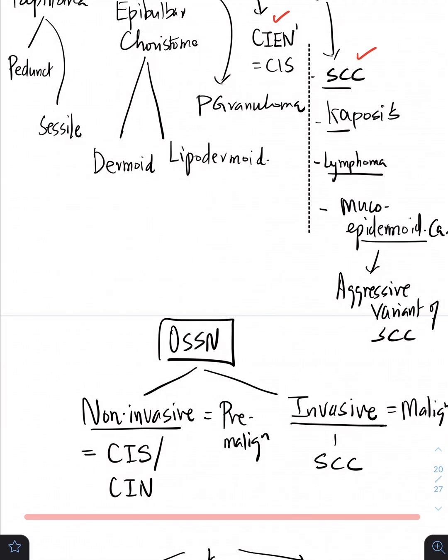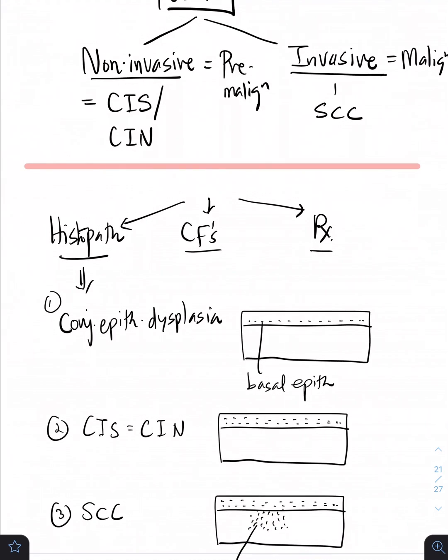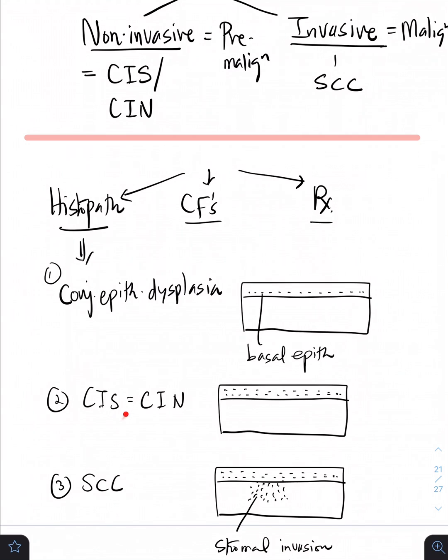Now we'll discuss OSSN in brief under three headings: one is the histopathology, the clinical features, and the treatment part of it. As far as histopath is concerned, you have three stages. One is going to be the conjunctival epithelial dysplasia which involves only the basal epithelium. Second is going to be the carcinoma in situ or the conjunctival intraepithelial neoplasia which involves the full thickness epithelium.